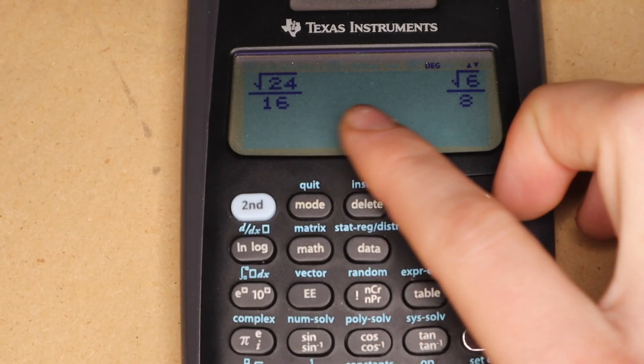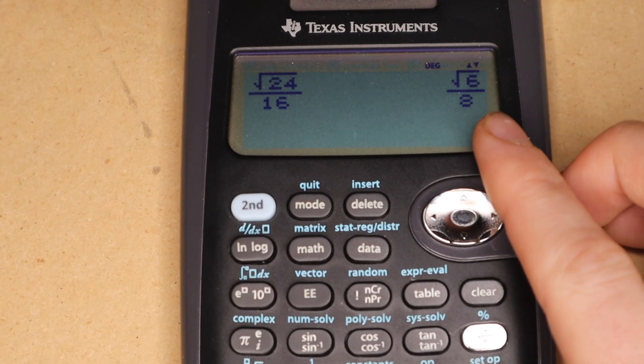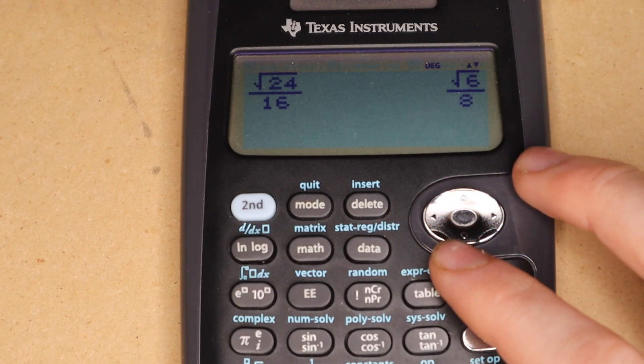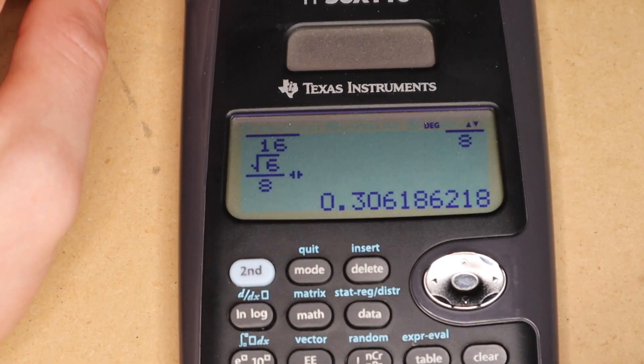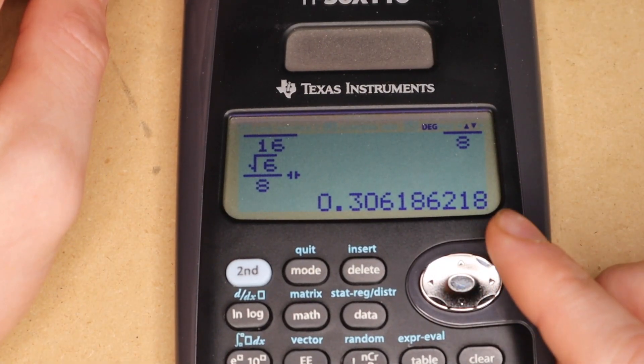And I almost forgot to mention that if you have any answer that you get in exact form and you want the decimal answer form, you can always just press this button right here and it will switch the exact answer to a decimal answer.